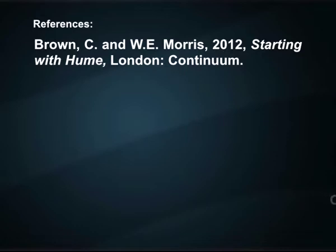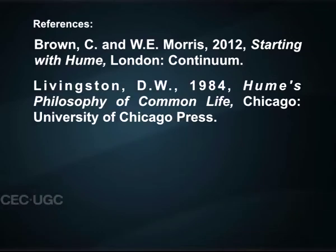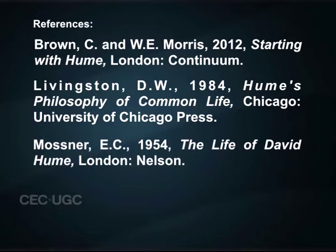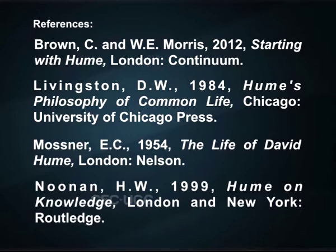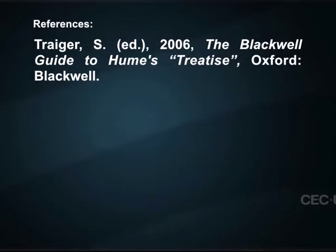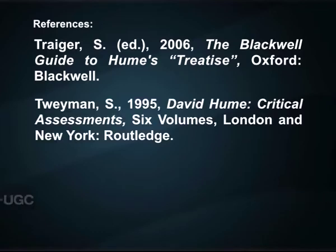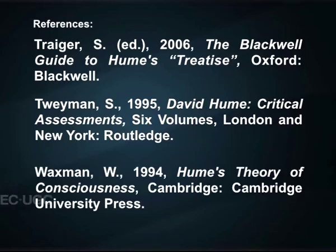Hope that you may go through the reference books for further reading. Starting with Hume, written by Morris W. E. and C. Brown in 2012, published by Continuum in London. Hume's Philosophy of Common Life, written by D. W. Livingston in 1984, published by University of Chicago Press. The Life of David Hume, written by E. C. Mossner, published by Nelson in 1954. Human Knowledge, written by H. W. Noonan, published by Routledge in 1999. The Blackwell Guide to Hume's Treatise, written by S. Traeger, published by Oxford. David Hume: Critical Assessments, six volumes, written by S. Traeger, published by Routledge in 1995. Hume's Theory of Consciousness, written by W. Waxman, published by Cambridge University Press. Thank you for watching this program. We can meet again with another topic. Have a nice day.